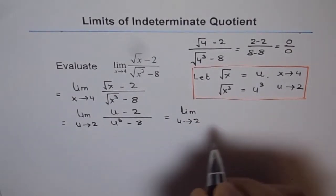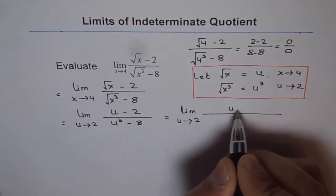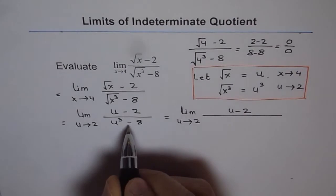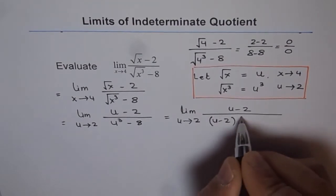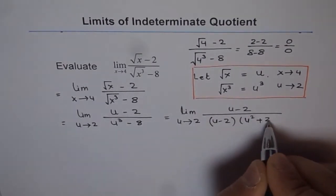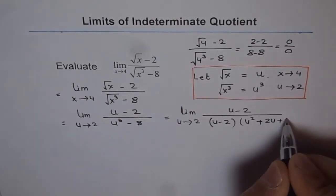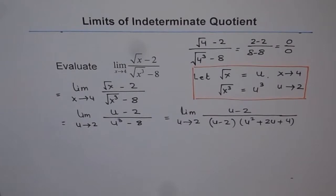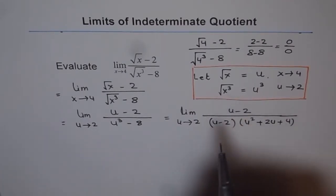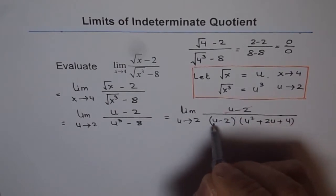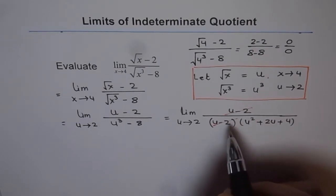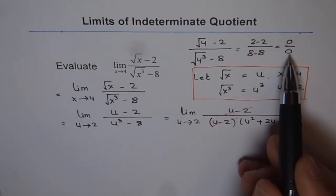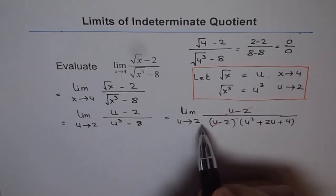We have u approaching 2. In the numerator, it is u minus 2. It is u cubed minus 2 cubed. 8 is 2 cubed, so we can write this as u minus 2 times u squared plus 2u plus 4. So that's what we get in the denominator. We have factored out u minus 2 from both numerator and denominator. These can be cancelled, and that indicates the reason why we got 0 in the numerator and 0 in the denominator. That means in the function there's a hole as x approaches 2. So at 2 there is a hole. 2 is not in the domain of the function.